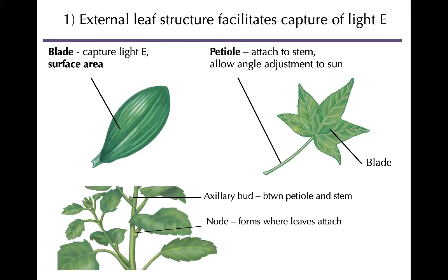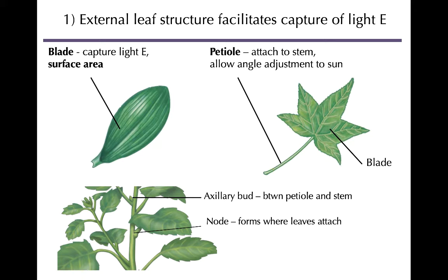The external structures facilitate light energy capture, particularly the blade of the leaf — the flat, large part — which increases surface area for light capture. Some leaves are sessile, attached straight to the plant stem, while others have a petiole, which is advantageous because it allows leaves to adjust their angle toward the sun. Some plants actively adjust their leaf angle throughout the day, and the petiole allows that. Wherever the leaf attaches to the plant is called the node.